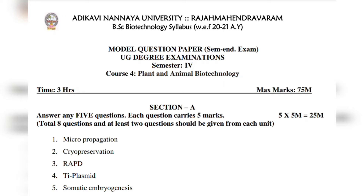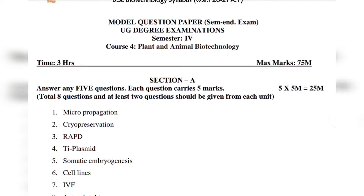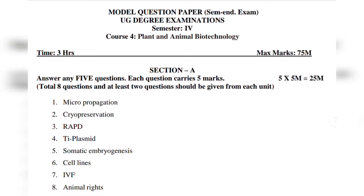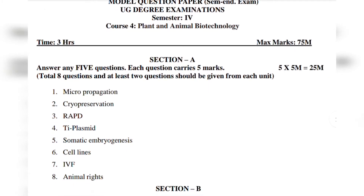So, from the university side with the release of the paper, you have an easy way to pass using the model paper. The short answer topics include Micropropagation, Cryo Preservation, RAPD, Ti Plasmid, Somatic Embryogenesis, Cell Lines, IVF, and Animal Rights.